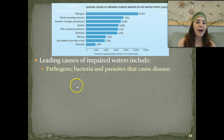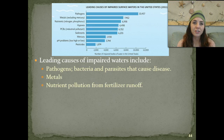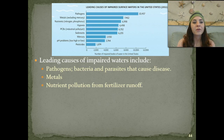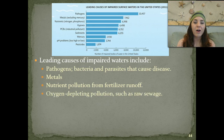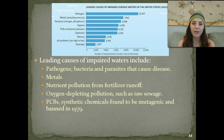Number one, we have pathogens such as bacteria and parasites that can cause disease—some of those come from sewage contamination in the waters as well as runoff. We have metals such as mercury, and you might hear in the news about mercury poisoning or bioaccumulation of mercury in food chains in lakes, rivers, and oceans. We also have nutrient pollution from fertilizer runoff—those are your nitrates and phosphates. We have oxygen-depleting pollution such as raw sewage that causes algal blooms. We have PCBs, which are synthetic chemicals found to be mutagenic, meaning they can mutate our DNA and cause things such as cancer and unchecked cell growth.